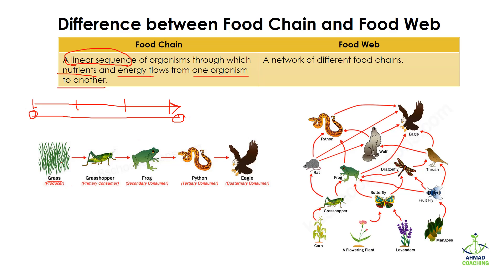For example, we have grass which produces its food. This food — nutrients and energy — is eaten by the grasshopper. The grasshopper is eaten by the frog, the frog is eaten by the python, and the python is eaten by the eagle. So the nutrients and energy present at the grass level are transferred all the way up to the eagle level. This whole process is a food chain.